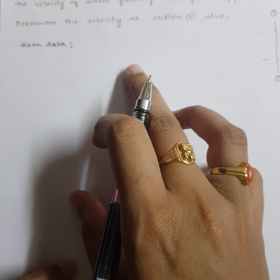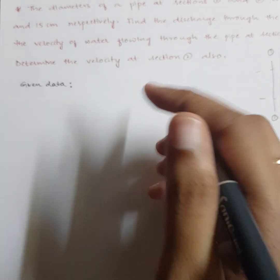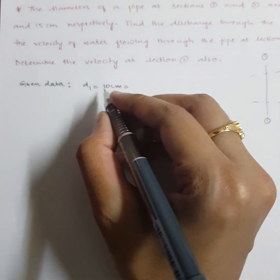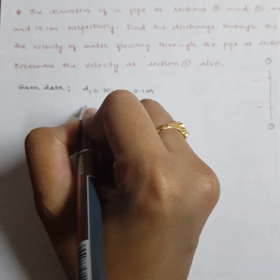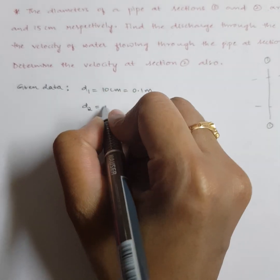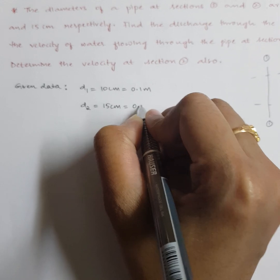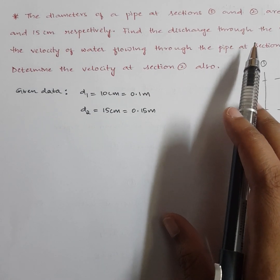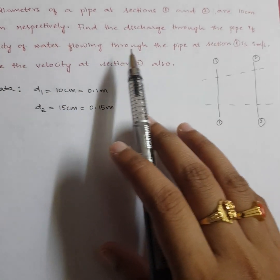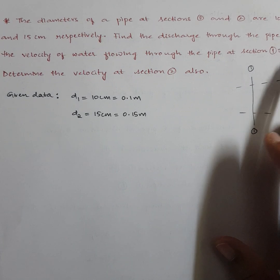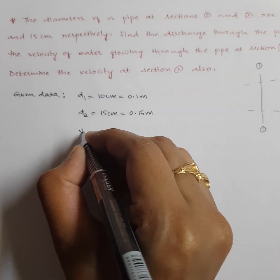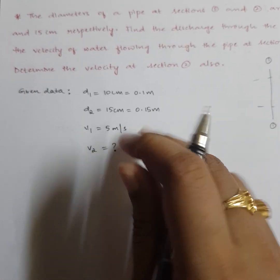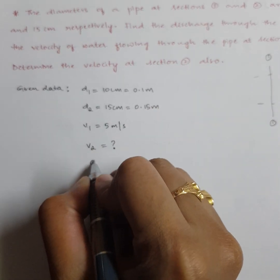Given data: diameter at section 1, D1, is 10 cm, which converts to 0.1 meters. Diameter at section 2, D2, is 15 cm, which converts to 0.15 meters. Velocity at section 1, V1, is 5 m/s. We need to calculate the discharge Q and the velocity at section 2, V2.